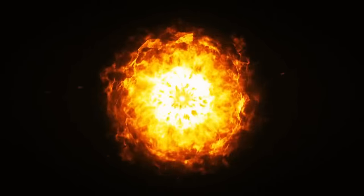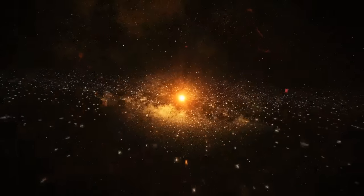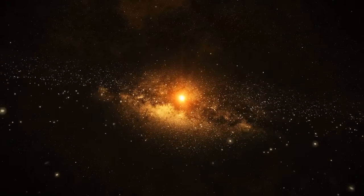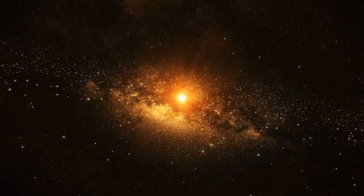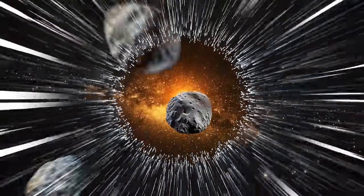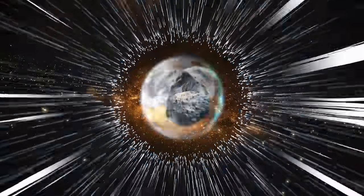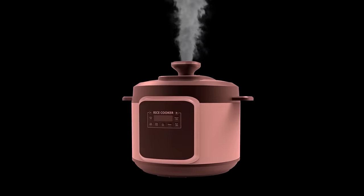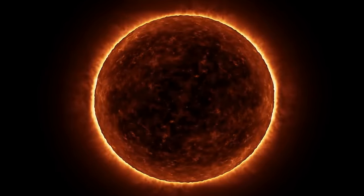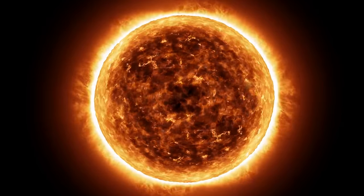First off, there was some serious heat already packed into the objects that came together to make our planet. Then, as Earth grew bigger and stronger, its gravitational force got a major power boost. It pulled in more stuff, but it also gave Earth a massive bear hug, squeezing everything tightly. And you know what happens when things get squeezed? They heat up like a pressure cooker. This crazy heating had a huge impact on Earth's structure.